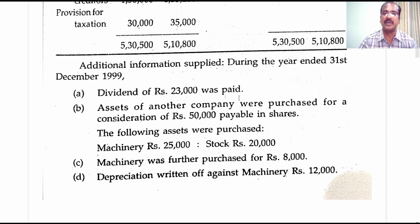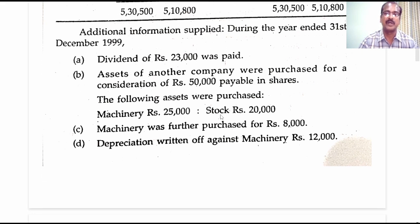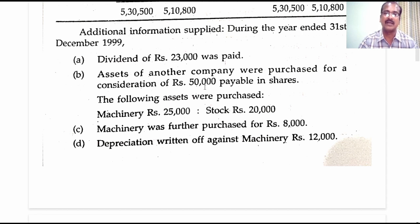Payment of dividend will be considered under application of funds in the funds flow statement. Assets of another company were purchased for a consideration of 50,000 rupees payable in shares: machinery 25,000 and stock 20,000. If you total these two assets, the value comes to only 45,000, whereas shares have been issued for 50,000. The difference of 5,000 rupees is nothing but the value of shares issued for the goodwill of the vendor company which sold these two assets to our company.